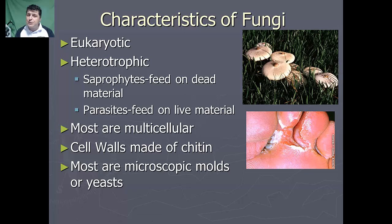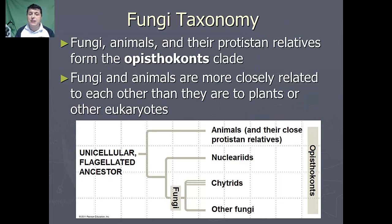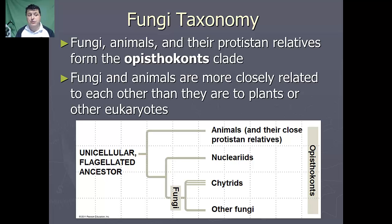The majority of our fungi are actually microscopic and they will include our molds and our yeast. Fungi, because of their shared DNA with animals and protist relatives, are going to form the epistakont clade. Looking at that same DNA, we find that fungi and animals are actually more closely related to each other than they are to plants or other eukaryotes.